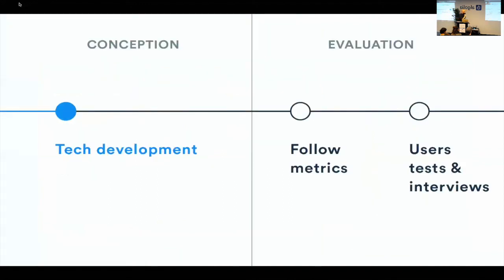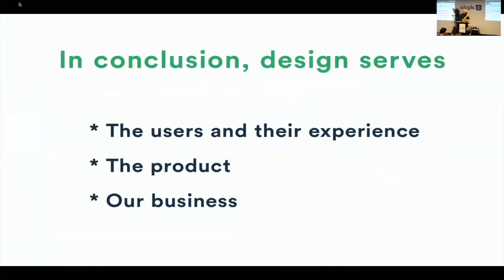What is next? Today tech development is finished for this MVP. We want to follow metrics, and more importantly we make user tests and interviews — because it's the way to improve this version and to iterate again and again. In conclusion, in Agile Design and in this example, design serves the user and their experience, the product, and finally our business.